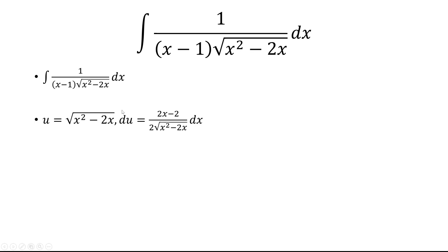So let's do a u substitution. We'll let u equal square root of x squared minus 2x. And so, to find the derivative, you could just put a 1 half on the outside. You bring down the power. We have x squared minus 2x, and then raise that to the negative 1 half times 2x minus 2.